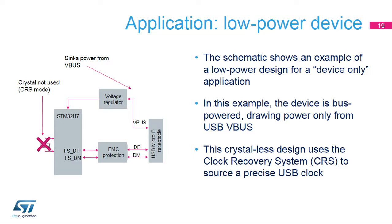Here is an application example of a low-power device. Power is drawn directly from the USB VBUS signal. To get a precise enough clock signal for high-speed communication, the USB clock is sourced from the clock recovery system without the need for an external resonator component, enabling a crystal-less design for such applications.